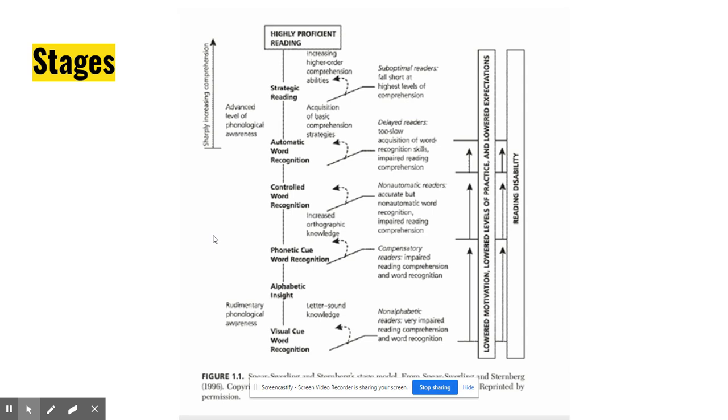This is Spear-Swerling and Sternberg stage model that seeks to demonstrate the ongoing relationship between discrete skills such as phonemic awareness, word recognition, and strategic reading. Skill gaps in the lower skills limit a student's ability to become highly proficient. And you'll see how these skills build upon one another and that there's multiple skills involved when we're talking about decoding and language comprehension.